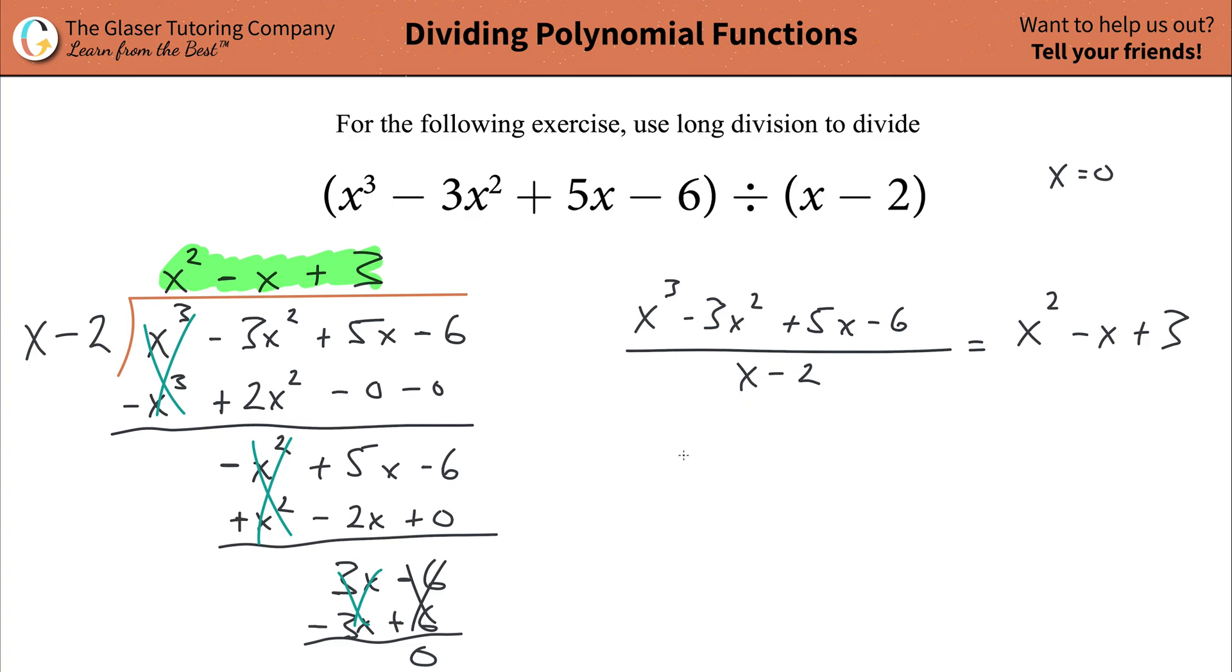Now, plug in 0. So 0 cubed minus 3 times 0 squared plus 5 times 0 minus 6, all then divided by 0 minus 2. That has to equal 0 squared minus 0 plus 3. So that goes bye-bye, that goes bye-bye, that goes bye-bye. I'm left with negative 6 over basically negative 2. And that's going to be equal to a positive 3. Is this true? Negative over negative is positive. 6 over 2 is going to be 3. And is 3 equal to 3?